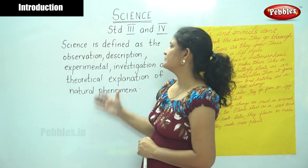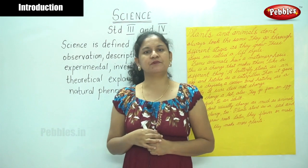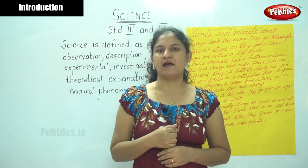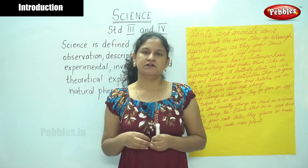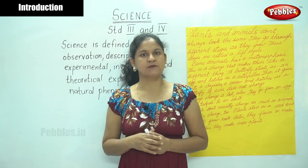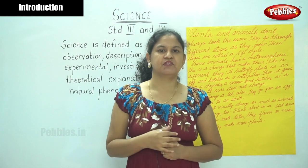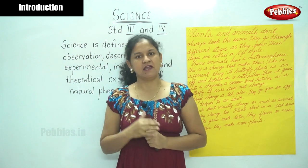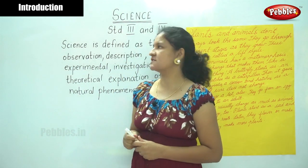Let us define science. Science is defined as the observation — observation is the learning of things. For example, if we take a butterfly, we see the different stages in a butterfly. Or if we take humans, there are different stages: first is infancy when we are babies, then the toddler or children stage, then adolescence and adulthood, and finally old age. Science is also about growth — even if you take a plant, it starts from a seed, grows into a sapling, then into a plant, and finally a tree. Science is the observation of the changes that take place.